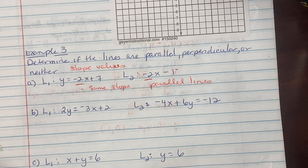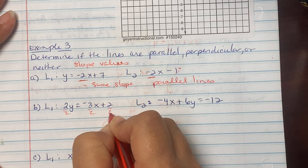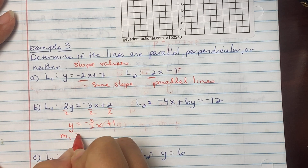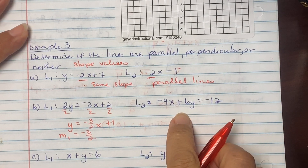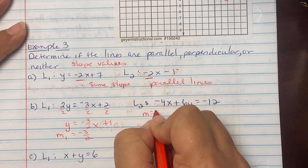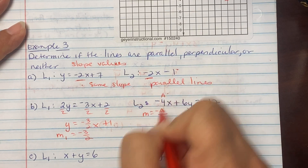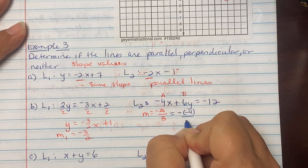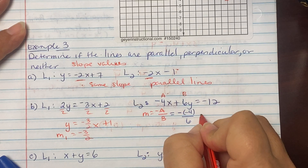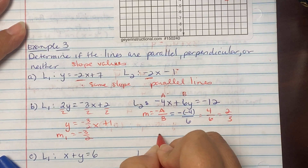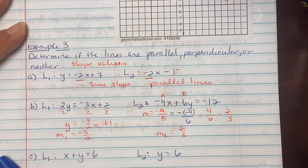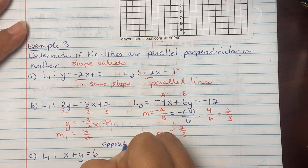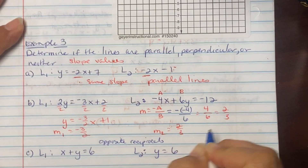Part b: Rewrite 2y equals negative 3x plus 2 by dividing by 2, giving y equals negative 3/2 x plus 1, so slope one is negative 3/2. The second equation is in standard form, so use negative A over B. A is negative 4, B is 6, giving negative of negative 4 over 6, which is positive 4/6, reducing to 2/3. Since negative 3/2 and 2/3 are opposite reciprocals, the lines are perpendicular.